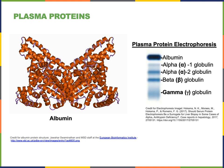When blood plasma is loaded into an electrophoresis gel and separated with an electric field, proteins separate out based on their relative charge, size, and shape. The top band is albumin. The other proteins are grouped into the alpha globulin bands — alpha-1 and alpha-2 globulin — the beta globulin band, and the gamma globulin band. The gamma globulin band primarily contains antibodies.